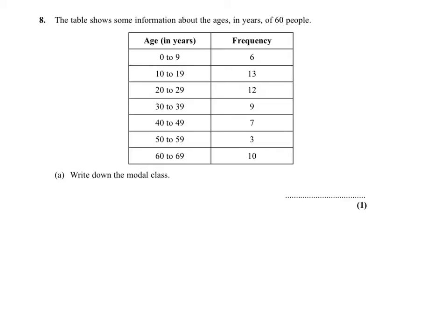In Question 8 we need to write down the modal class — in other words, the mode from this frequency table. What you notice is that the highest frequency is 13, and the mode, as we know, is given by the highest frequency.